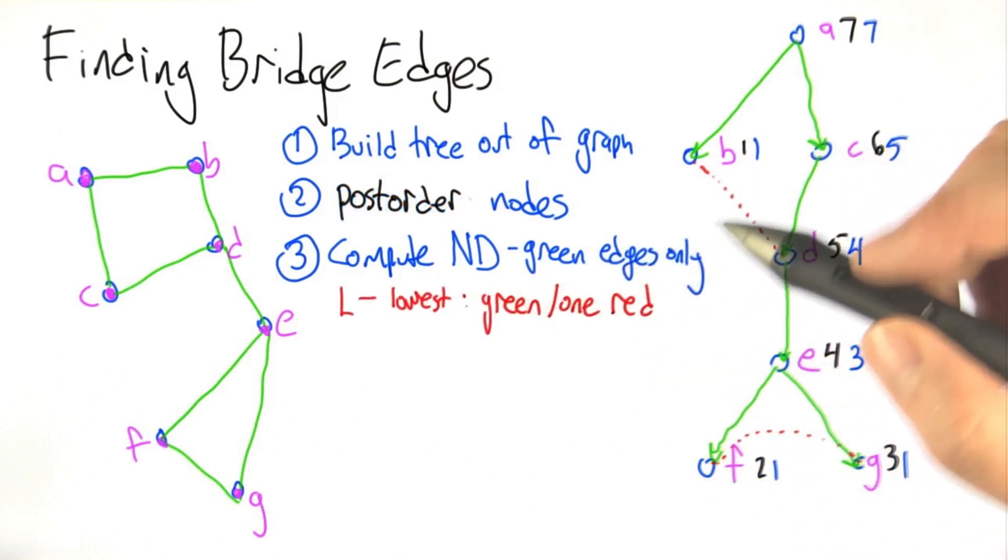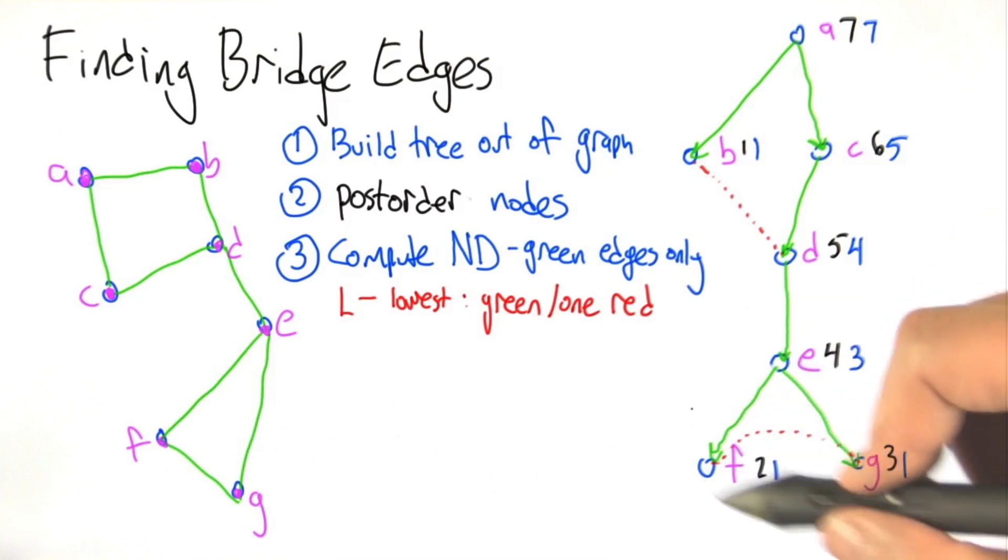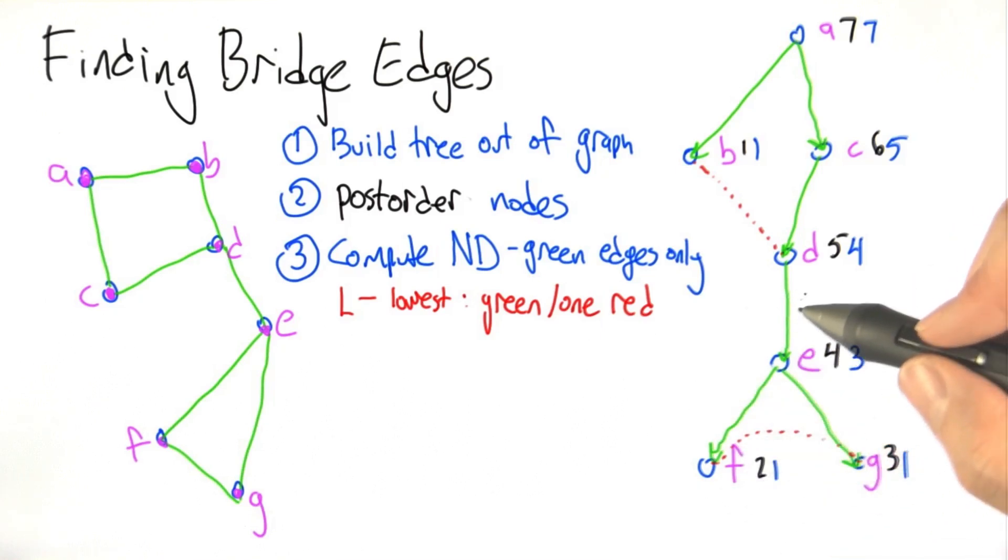So the next thing we're going to compute is for each of the nodes we're going to consider the set of nodes that are descendants of the node or reachable from the descendants of the node by 1 hop of a non-tree edge. And of all those nodes that are reachable we're going to look at the post-order value that is the smallest. We'll call that L.